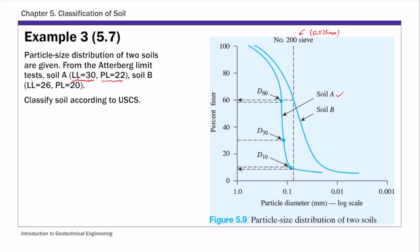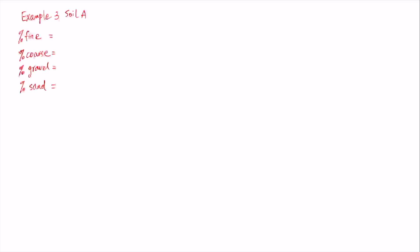From this curve, if you look at the intersection of the number 200 sieve with the curve of soil A, the corresponding percent finer on the y-axis is about 8 or 9 percent — so about 8 percent. This is the percent of fines. You have 8 percent of soil A finer than 0.075 millimeters — that's our percent of fines.